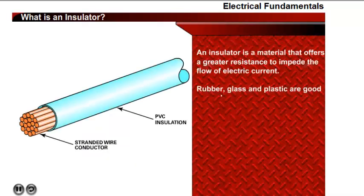An insulator offers resistance that impedes the flow of electric current. Some examples of insulators are rubber, glass, and plastic.